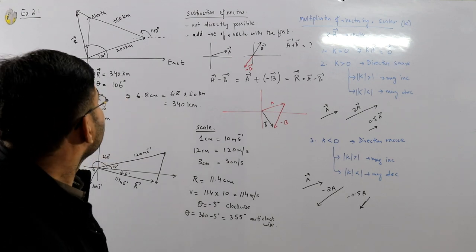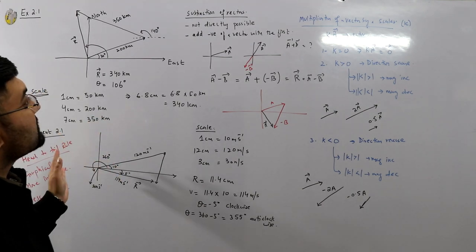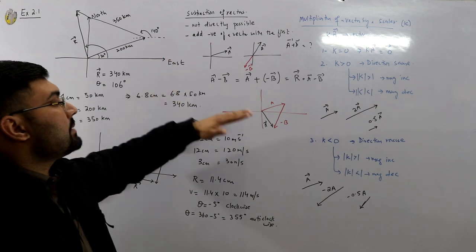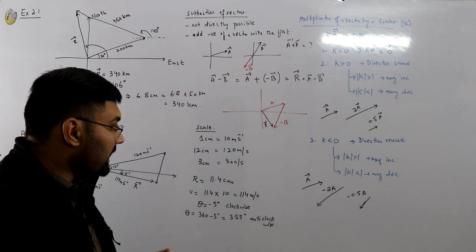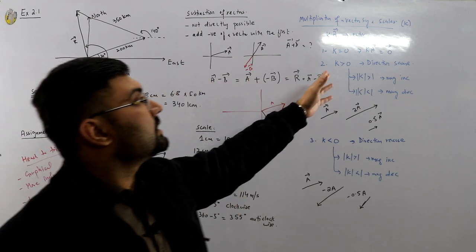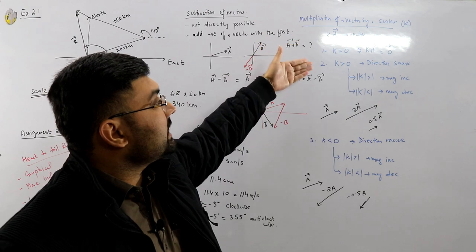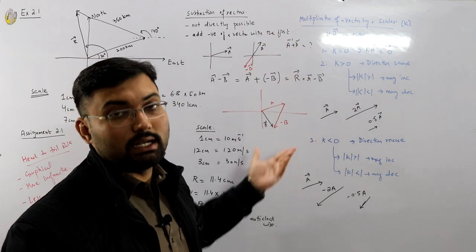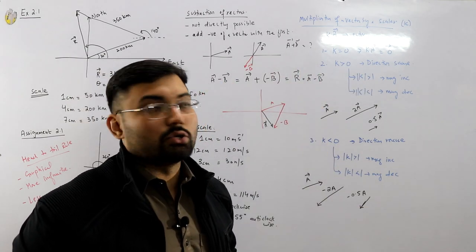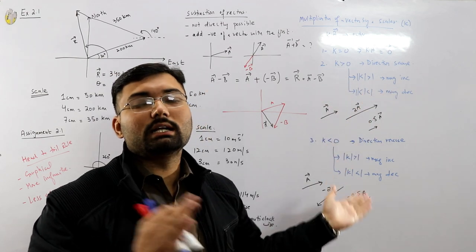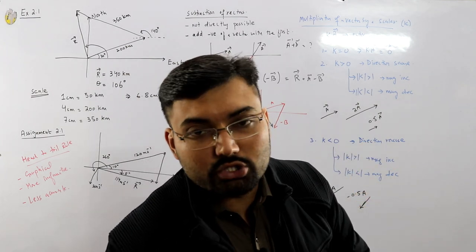To summarize: do the examples and assignments on graph paper with a ruler and protractor. Subtraction of vectors is not directly possible — take the negative of the vector being subtracted and add it to the first. For scalar multiplication: k = 0 gives zero vector; k > 0 keeps same direction; k < 0 reverses direction. If |k| > 1 magnitude increases; if |k| < 1 magnitude decreases.